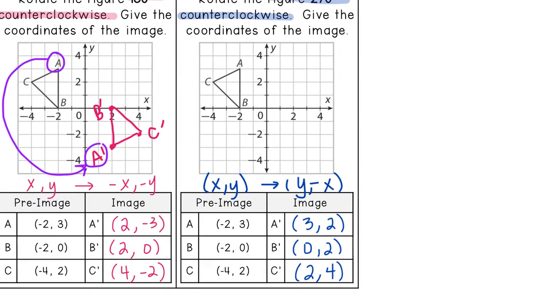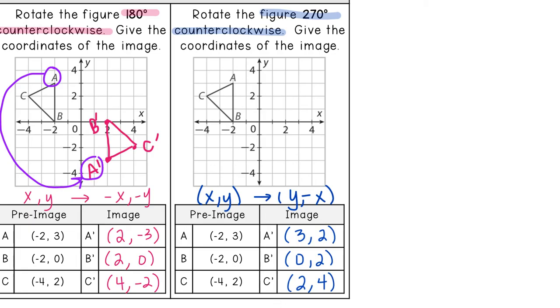So let's draw our picture. That is our A prime. (0, 2), here is our B prime. And (2, 4), our C prime. And then if I look at it, here's A and here's A prime. So this time I went all the way around to do 270.